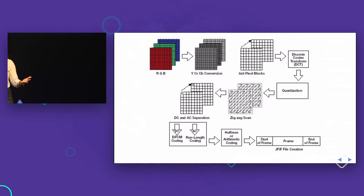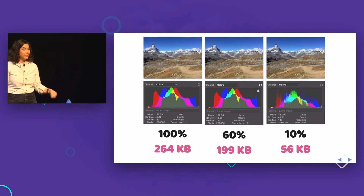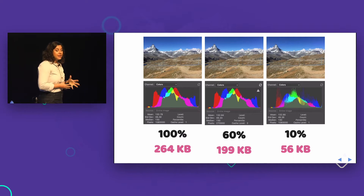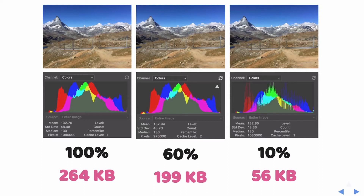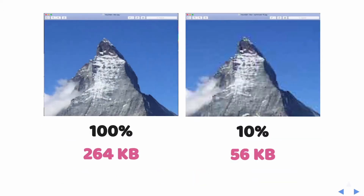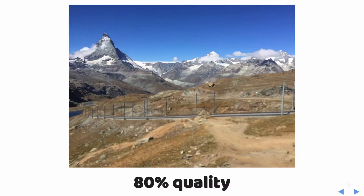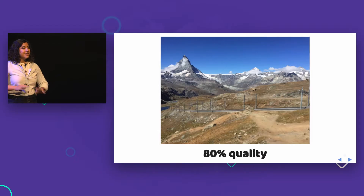Lossy images aren't a bad thing — they're great for performance. On smaller image sizes, you really can't tell much of a difference in quality. At 10% quality, there is some artifacting and banding in the sky, but the big change is the file size. When you look at the histogram, at 10% compression you save the color data at the extremes but lose the transition colors in between — that's what causes the artifacting. 80% quality is probably a good medium, and honestly 60 to 70 is usually okay.